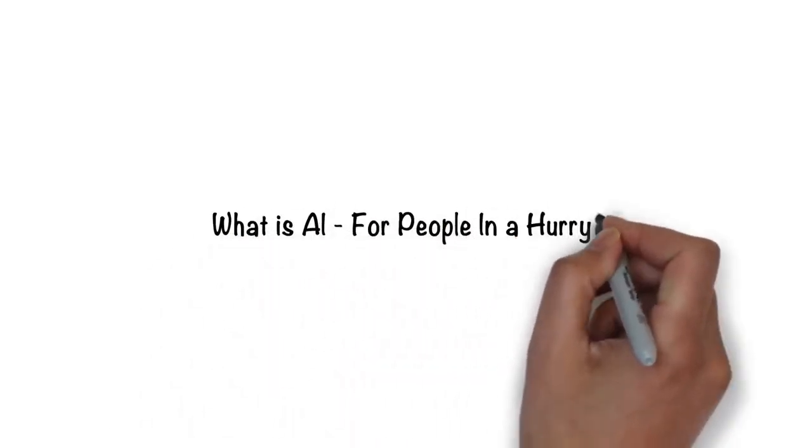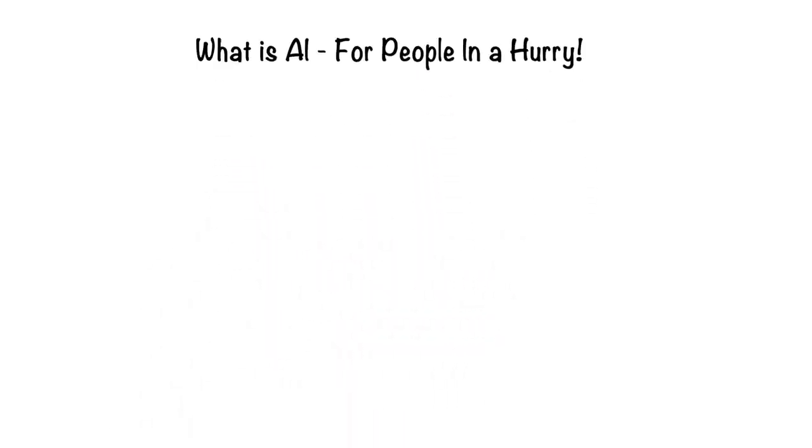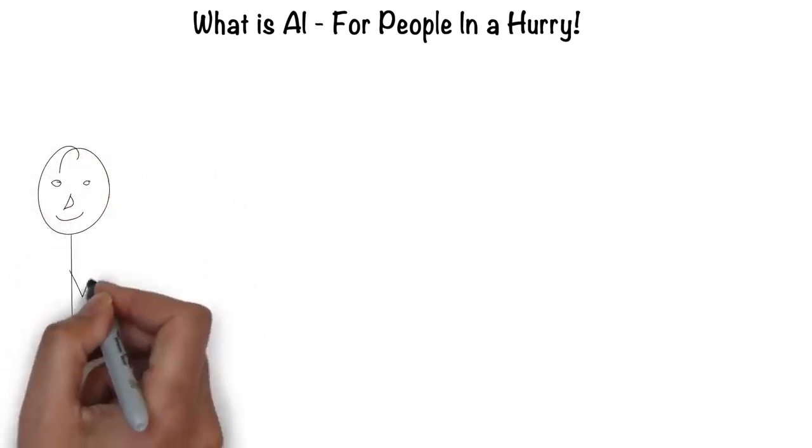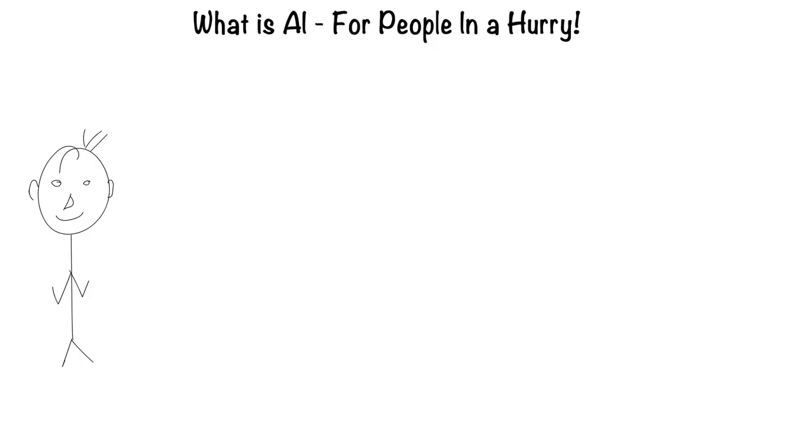Artificial intelligence for people in a hurry. The easiest way to think about artificial intelligence is in the context of a human. After all, humans are the most intelligent creatures we know of.